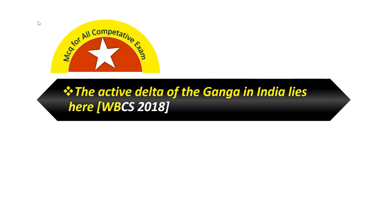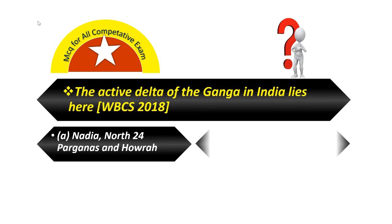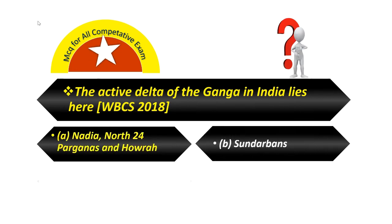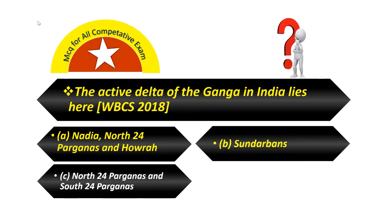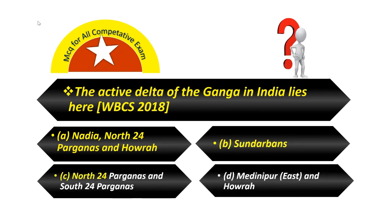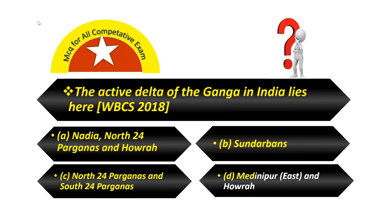The active delta of Ganga in India lies in: Option A — Nadia, North 24 Parganas, and Howrah. Option B — Sundarbans. Option C — North 24 Parganas and South 24 Parganas. Option D — East Midnapore and Howrah.